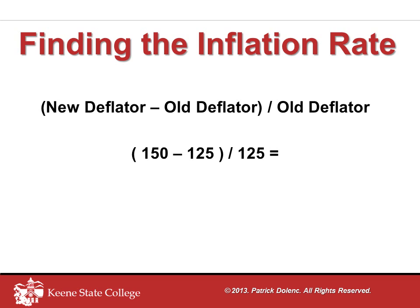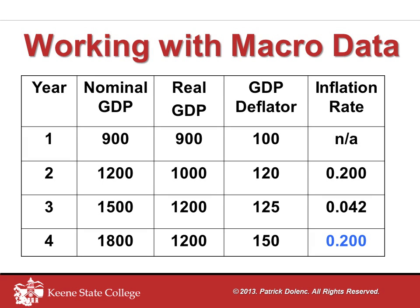The numerator gives us a value of 25, the denominator is 125, and whether you rely on a calculator or not, you should end up with a result of 0.2 or 20%. We fill that into the final cell and we've completed the table. If you understand what we've just done, you should be in really good shape for working with macroeconomic data on either an out-of-class assignment or on an exam.